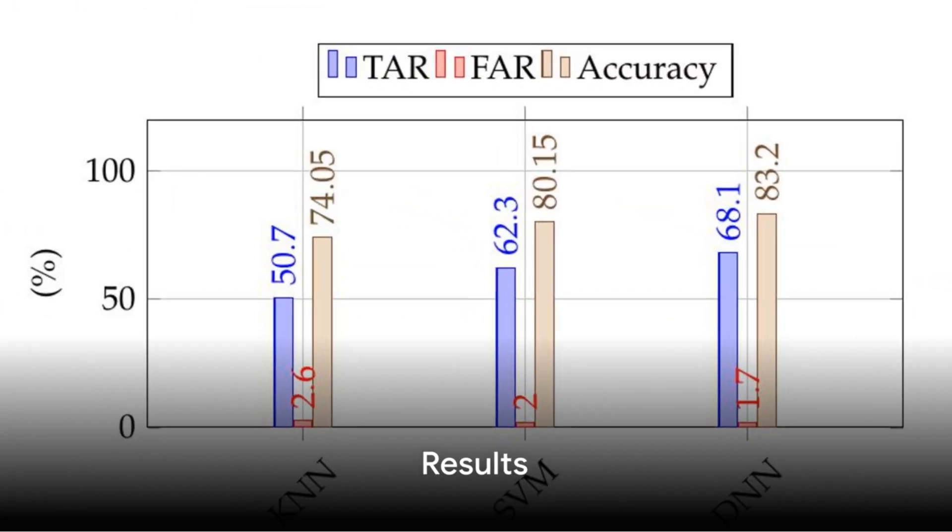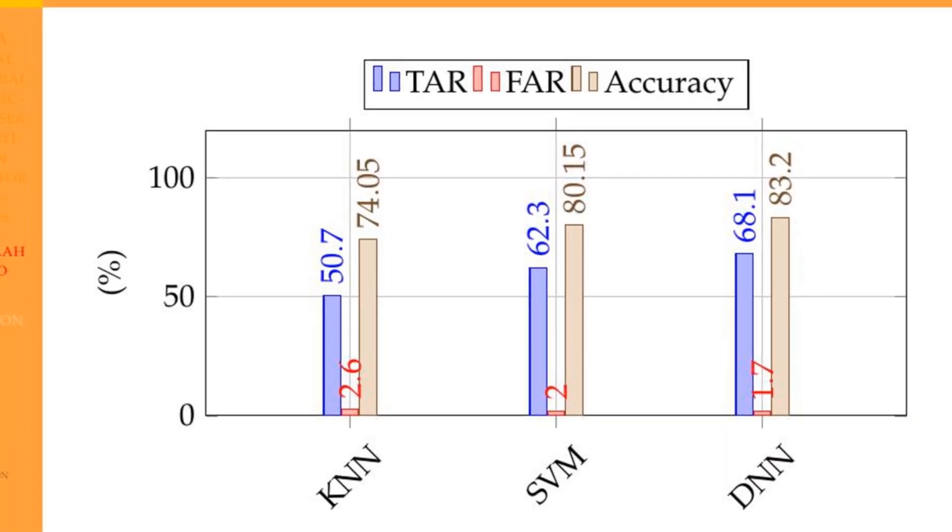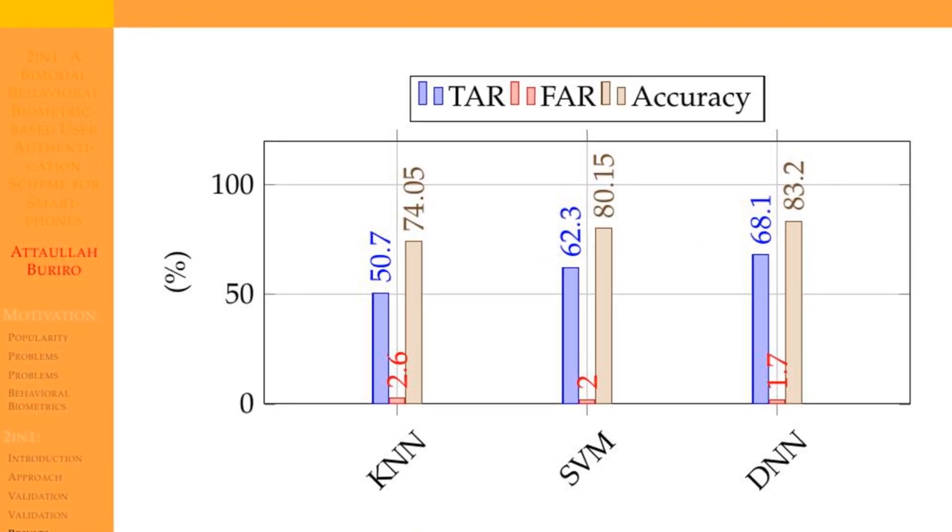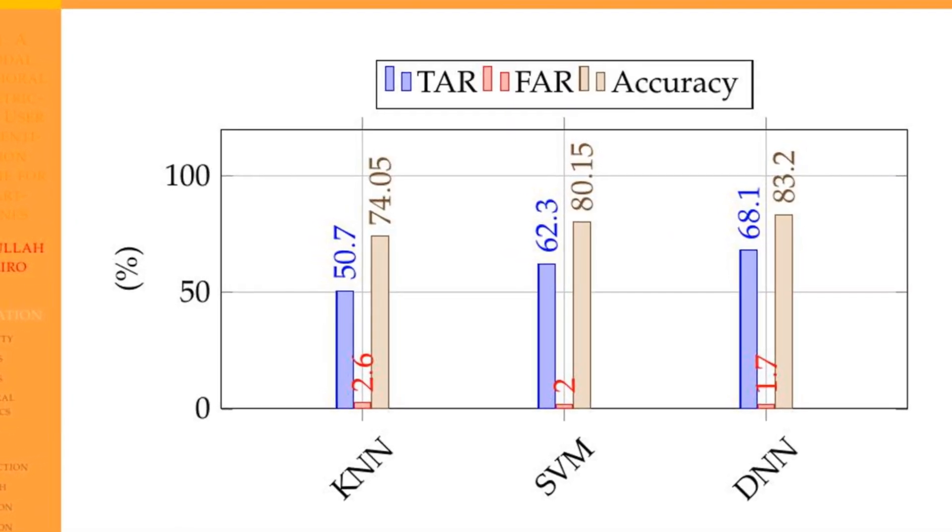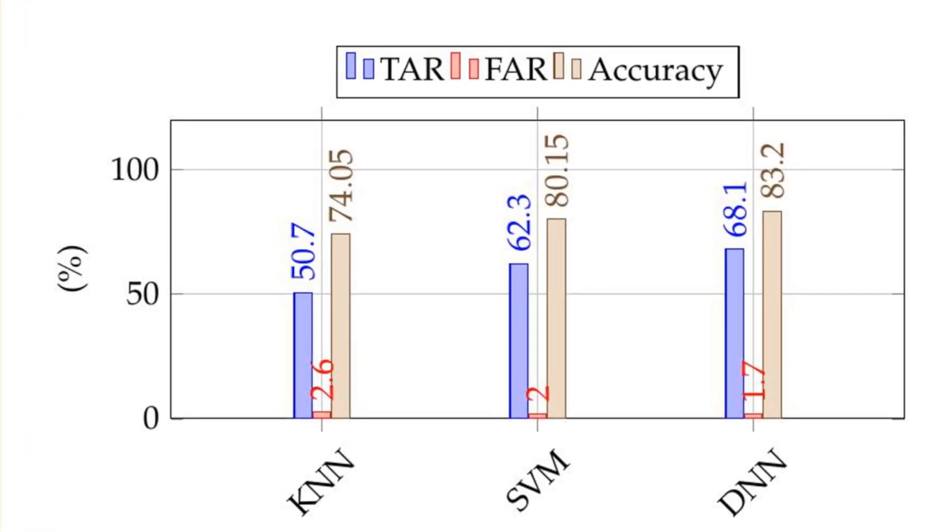We present the results of unimodal settings first. On touch typing features only, deep neural network performed well and achieved 83.2% accuracy. TAR in this slide is the rate of true acceptance of the legit attempts, whereas FAR is the false acceptance of adversarial attempts.